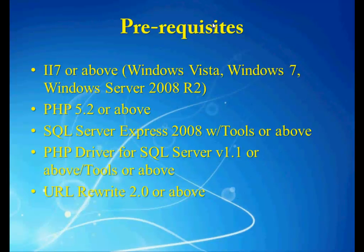Now let's move to the prerequisites. All you need to have is Internet Information Services — the web server, IIS 7 or above — and a PHP-compatible compiler version 5.2 or above, and SQL Server Express Edition 2008 with SQL Server Management Tools, or any other edition such as Standard, Web, or Enterprise Edition. Then comes the PHP driver for SQL Server version 1.1. You can download this from Microsoft's website. And when you want to customize the display of blog URLs, you need the URL Rewrite 2.0 module.